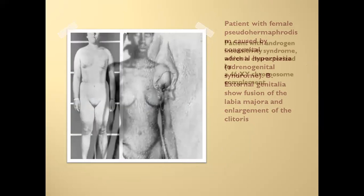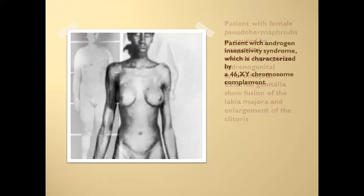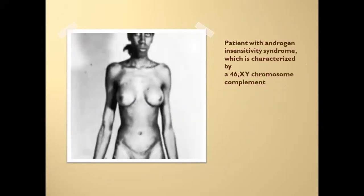In androgen insensitivity syndrome, the chromosomal pattern is 46XY, but externally the patient appears female. This is because androgens are present, but the problem lies in the androgen receptors, which are abnormal.